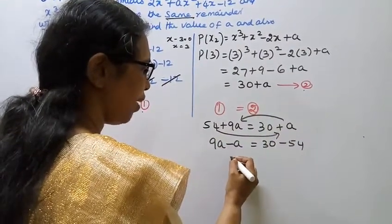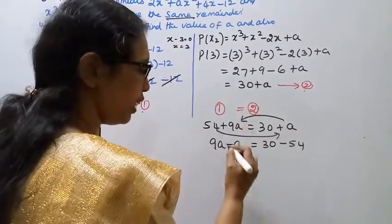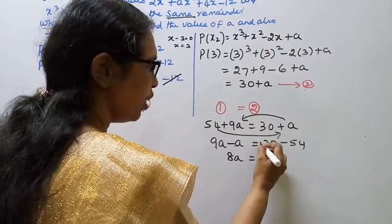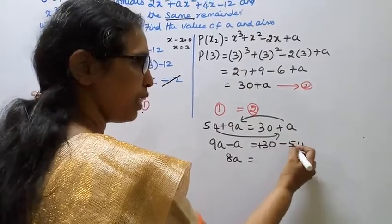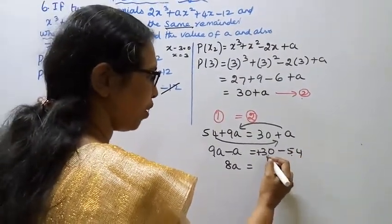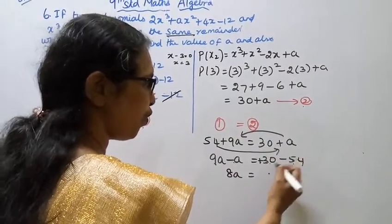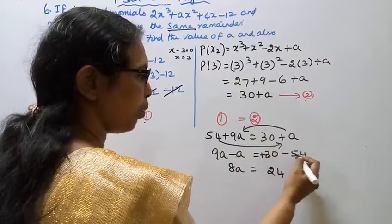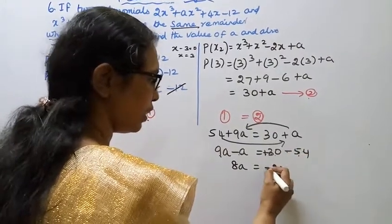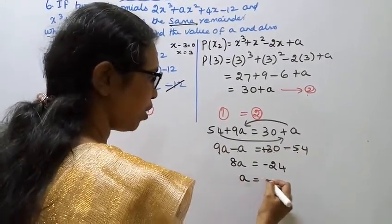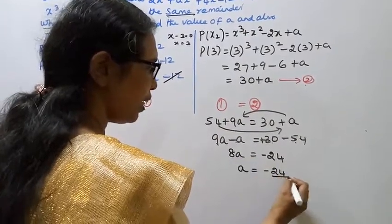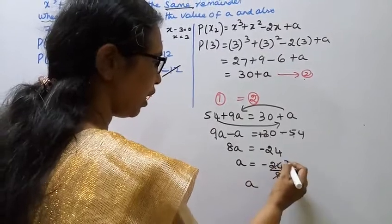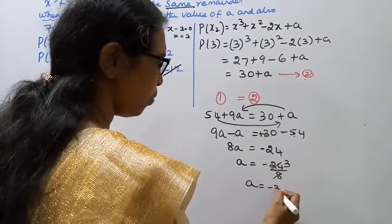This gives 8a equals 30 minus 54, which is minus 24. Therefore a equals minus 24 divided by 8, which gives a equal to minus 3.